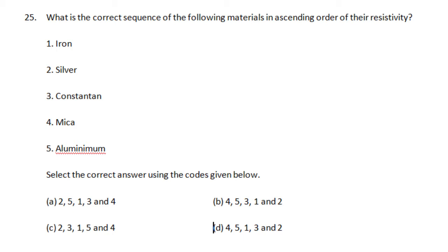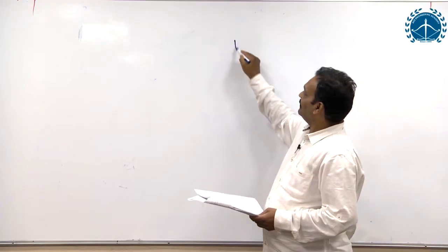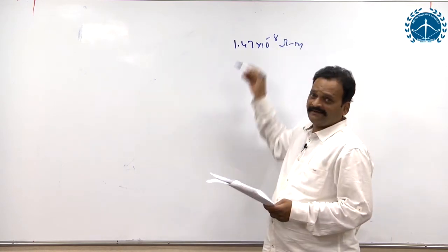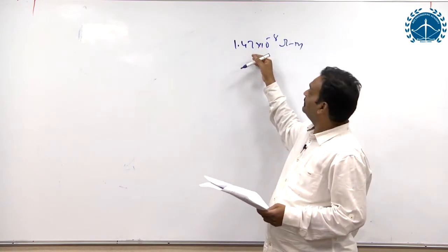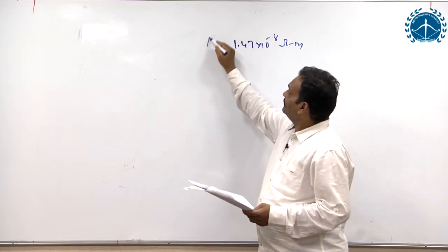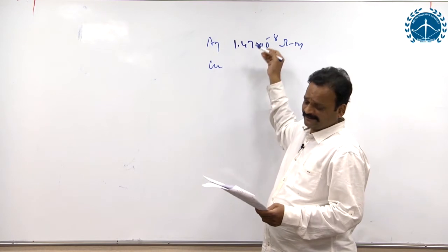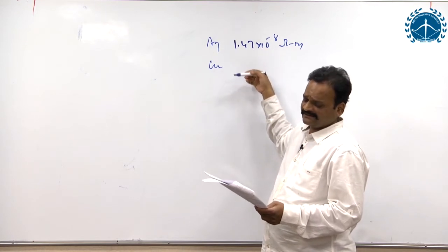Now for metals we know that silver is the best conductor with lowest resistivity of 1.47 into 10 to the power minus 8 ohm meter. Next best conductor is copper with 1.71 into 10 to the power minus 8, next best is gold, next best is aluminium.